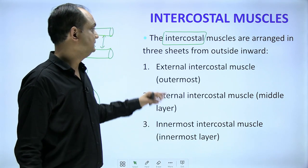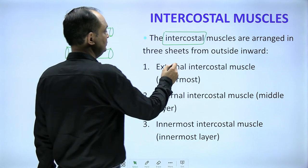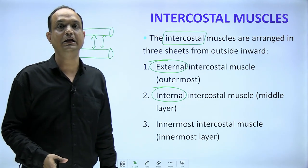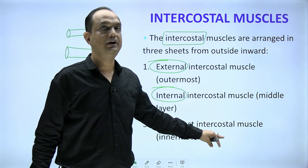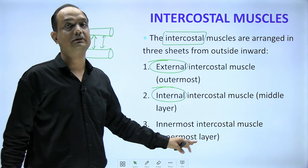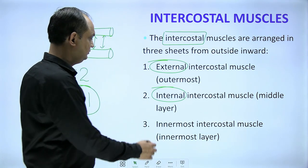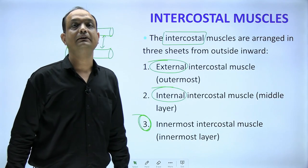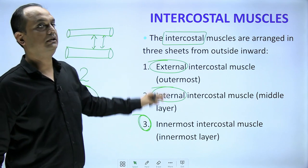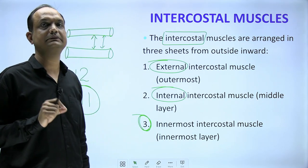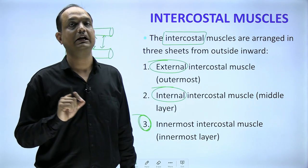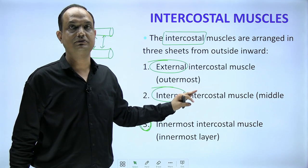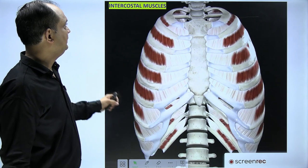In these spaces we find three sets of muscles from outside to inside. The outermost is the external intercostal, the middle one is the internal intercostal, and the innermost layer is called the innermost intercostal muscle. So intercostal muscles are the muscles present in the space between adjacent ribs. We have 11 spaces and three sets of muscles: external, internal, and innermost intercostal.